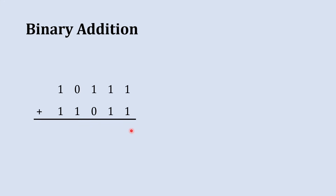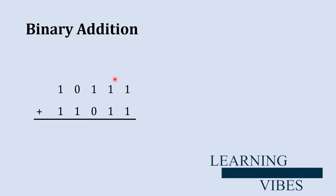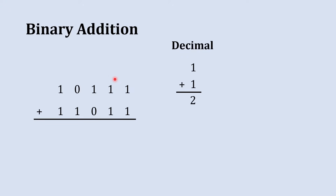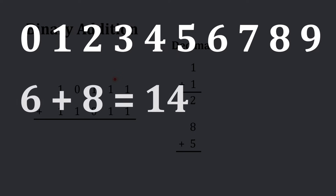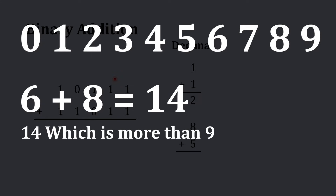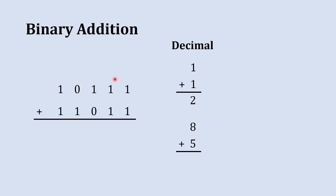When we add 1 plus 1, the sum is 0 and a carry of 1 goes to the next column. To understand this, consider decimal addition: 1 plus 1 in decimal is 2, and 8 plus 5 in decimal is 13. In decimal there are 10 distinct digits from 0 to 9, so when the sum of any two digits exceeds 9, a carry is generated and transferred to the next column.